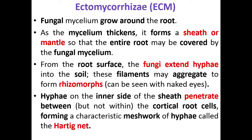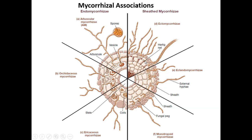From this root, the fungi keep growing and their hyphae — the structural component of fungi — aggregate to form rhizomorphs, which can easily be seen by the naked eye. The hyphae then penetrate inward into the cortical root cells, forming a meshwork of hyphae which we call the Hartig net.